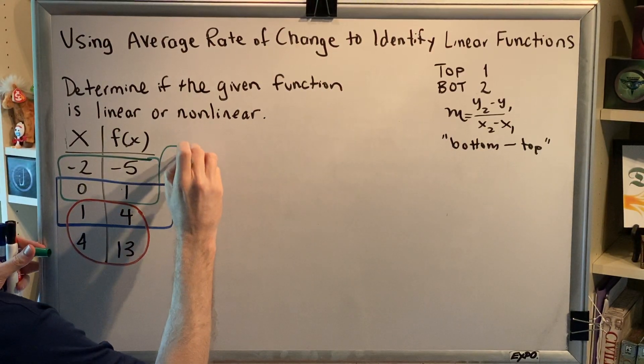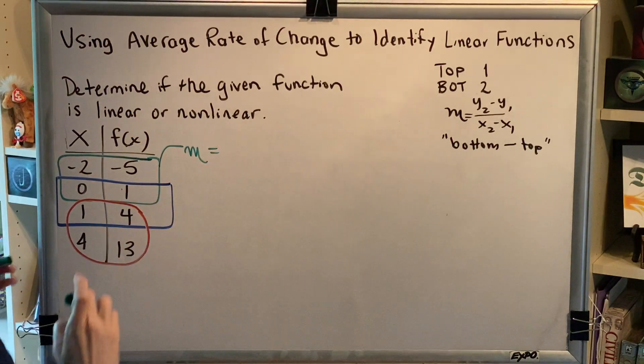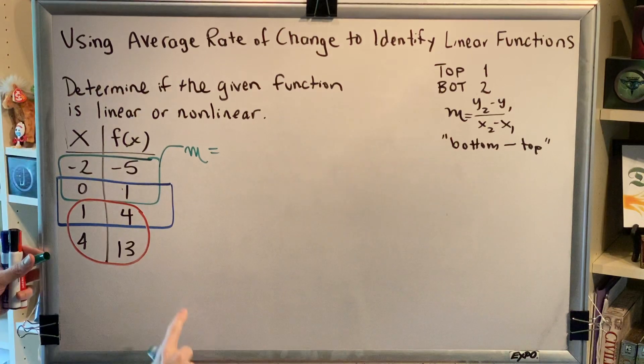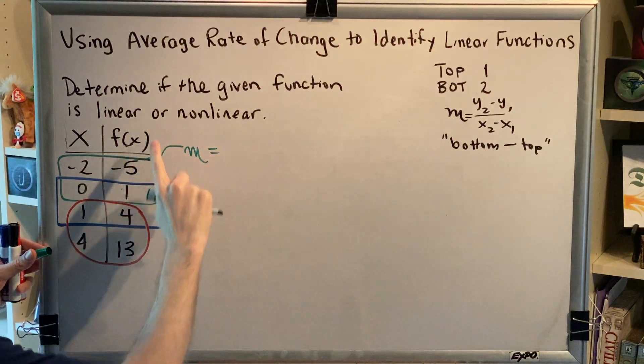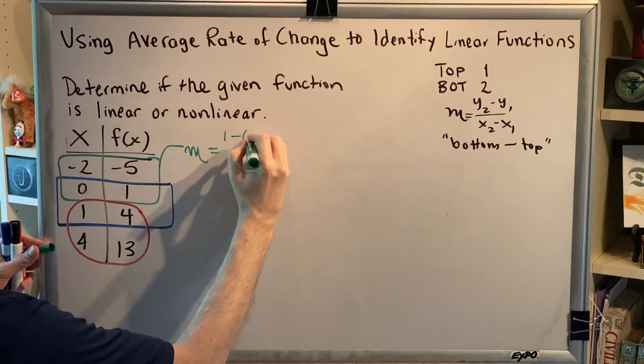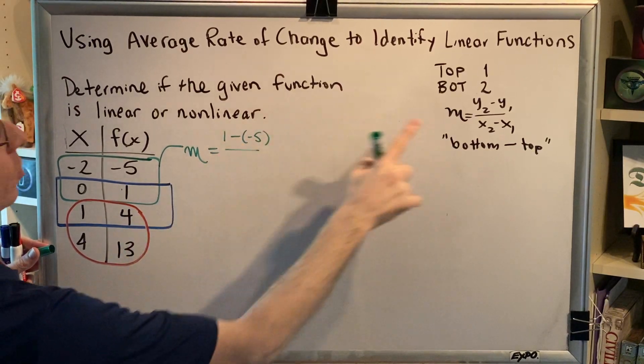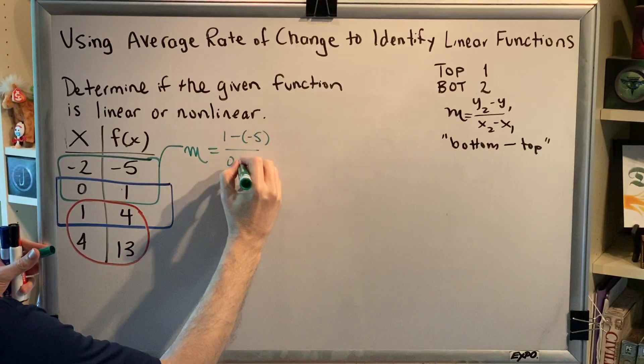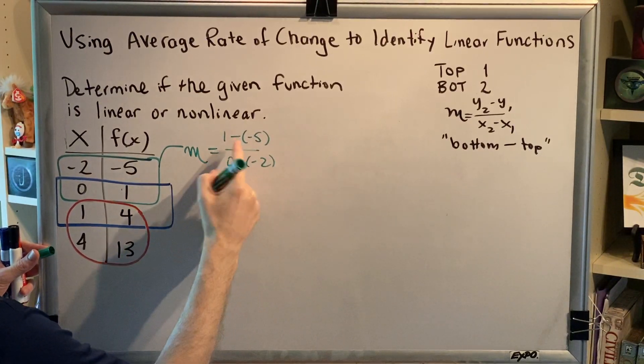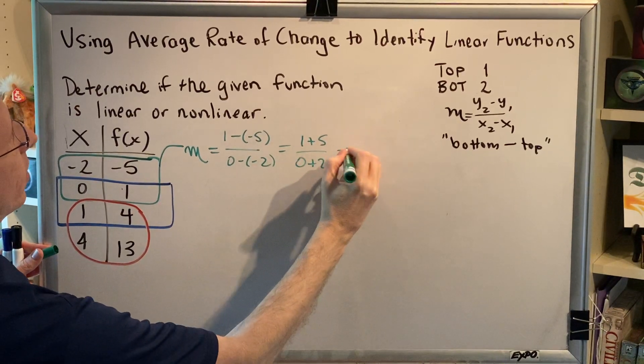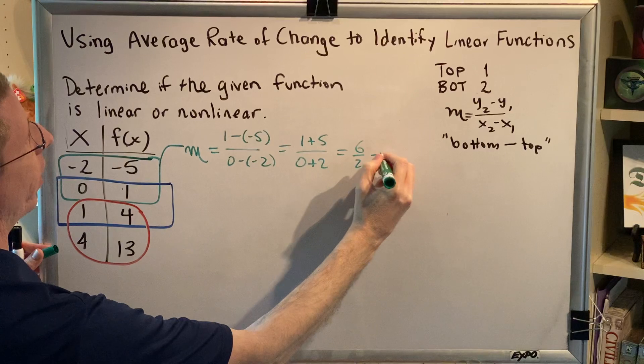Let's start with our first pair of points and finding the slope. So we need to do the y values, bottom minus top. f of x and y are the same, so we do bottom minus top: 1 minus negative 5. Then we need to do x values, bottom minus top: 0 minus negative 2. Subtracting a negative is the same as adding, so we get 1 plus 5 over 0 plus 2, 6 divided by 2, which is 3.